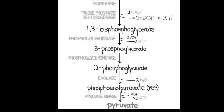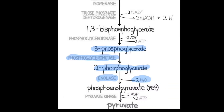3-phosphoglycerate is converted into 2-phosphoglycerate with the help of an enzyme called phosphoglyceromutase, which moves the phosphate from the third carbon position to the second carbon position of the glycerate. Then another enzyme, enolase, removes one water molecule from the glycerate — and since there are 2 parallel reactions, 2 water molecules are removed. By removal of the water molecule, the molecule is now called phosphoenolpyruvate, or PEP — the first carbon acceptor in the C4 cycle.